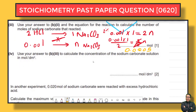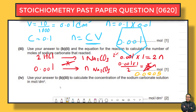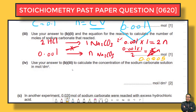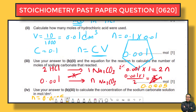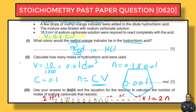The next question asks us to use our answer from part ii to calculate the concentration of the sodium carbonate solution in mol/dm³. As you can see, each step is based on the previous one. We have n = 0.0005 mol.